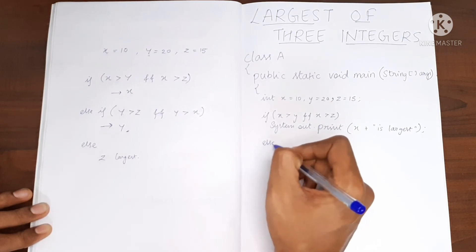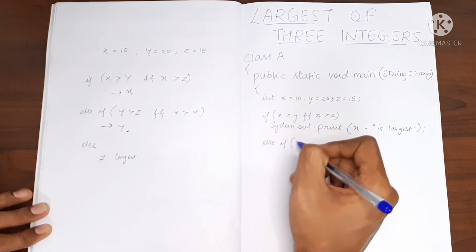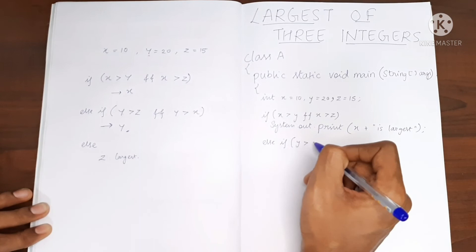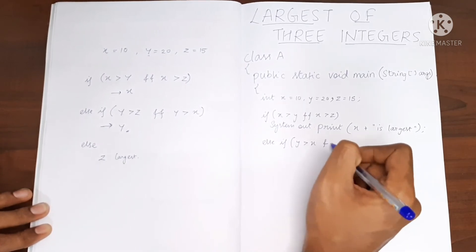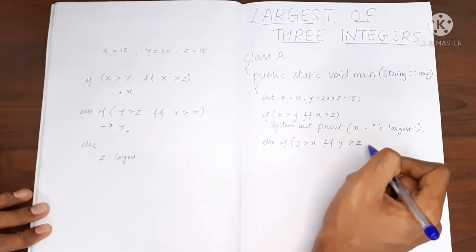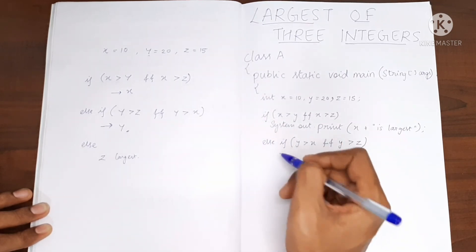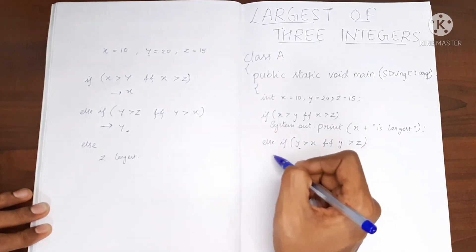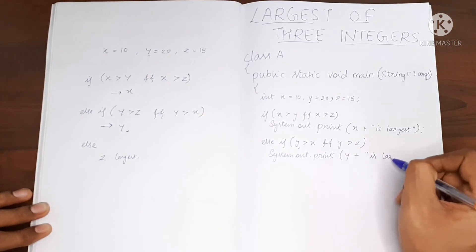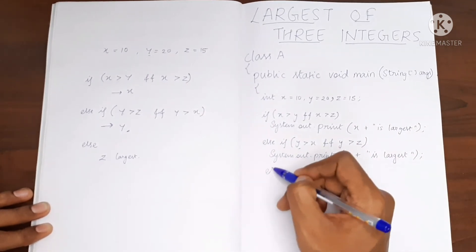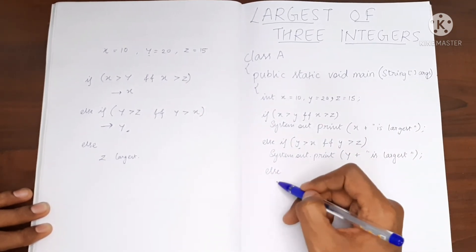Else if y is greater than x and y is also greater than z, we will say that y is the largest one. Else we will print that z is the largest one.